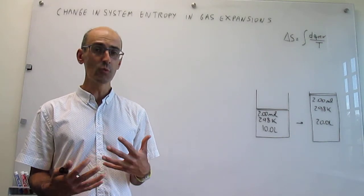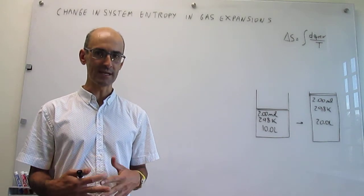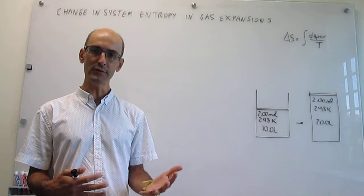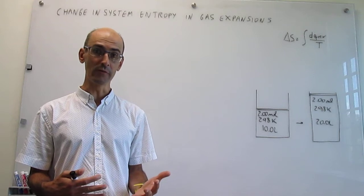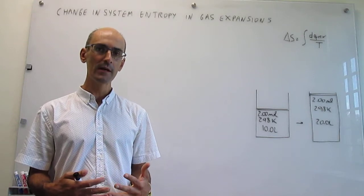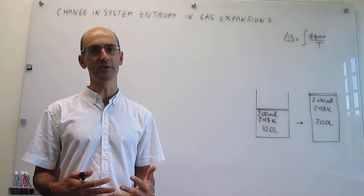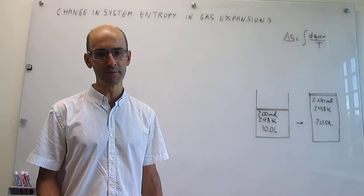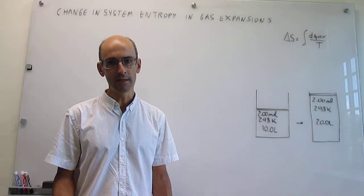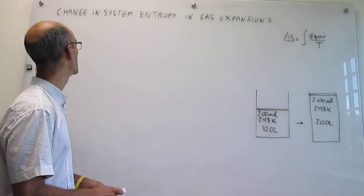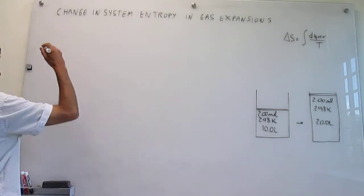There are two ways we are going to do this gas expansion. First, we are going to do it reversibly, and then we are going to do it against a constant external pressure of one atmosphere.